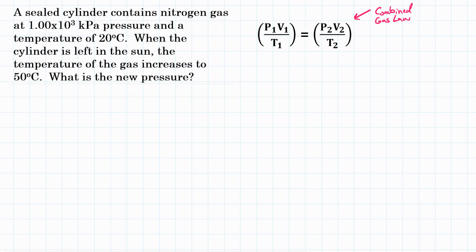Let's write down what the problem gave us. We had a pressure, we'll call that P1, of 1.00 times 10 to the third kPa and at that same time we had a temperature, let's call it T1, of 20 degrees Celsius.